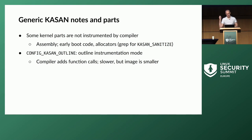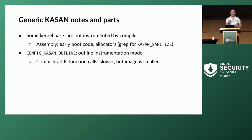The instrumentation checks mentioned were for inline instrumentation mode. KASAN also has an outline instrumentation mode where instead of directly embedding shadow checks, it adds function calls. This is a bit slower due to the function call overhead, but it makes the kernel image smaller — useful if your device doesn't allow a very big kernel image.